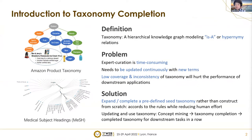I'm going to introduce the task of taxonomy completion. Taxonomy is a hierarchical knowledge graph modeling ISA or hypernymy relations. Typical taxonomies in application include Amazon product taxonomy and medical subject headings, which are shown on the left. Expert curation of a taxonomy is time-consuming, and taxonomies need to be updated continuously with new terms. Low coverage and inconsistency of taxonomy will hurt the performance of downstream applications. The solution is to use a model to expand or complete a predefined seed taxonomy, rather than construct them from scratch once a new term is mined, while reducing human effort.